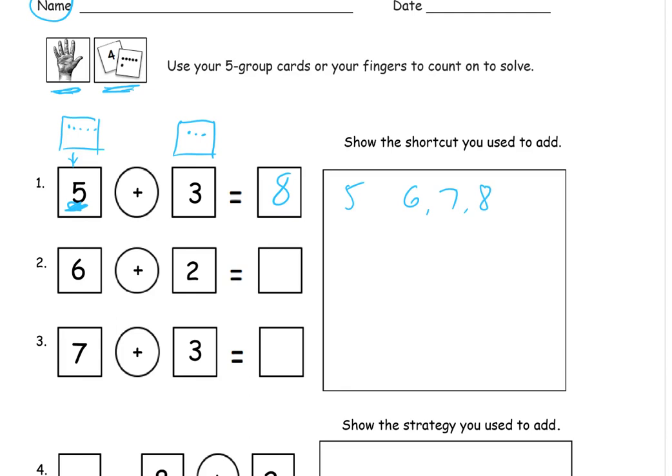Then for the next one, two. We're starting with six and we're counting on two more. So if you're going to use your five group cards, you would just draw the cards that you used. One, two, three, four, five. There's the six. And then you need the two card with the two dots. Count them all.